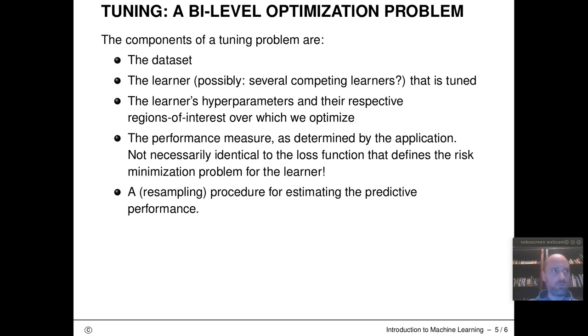So for example, we could minimize something like the log loss, the Bernoulli loss for logistic regression model, because this is something that's smooth, that's convex, that we can optimize with gradient based techniques. But on the outside, we might actually be interested in optimizing for the area under the curve, the AUC metric, which is much harder. It's possible to directly optimize this, but usually most software can't do this.